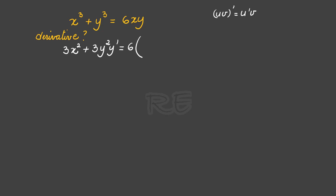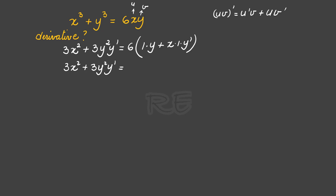For 6xy, we keep the 6 and differentiate xy according to the product rule. It is going to be u prime — the derivative of x, which is 1, times y, plus u — x times the derivative of y, which is 1 times y prime. This gives us 3x squared plus 3y squared y prime, and using distribution it will be equal to 6y plus 6xy prime.